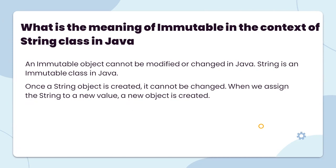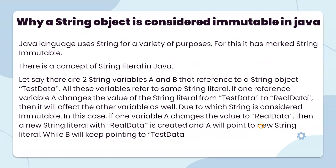The first question is: what is the meaning of immutable in the context of the String class in Java? An immutable object cannot be modified or changed in Java. String is an immutable class in Java. Once a String object is created, it cannot be changed. When we assign a String to a new value, a new object is created.